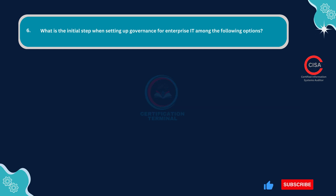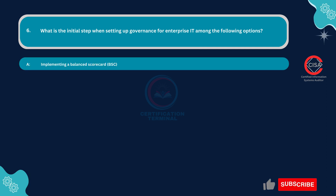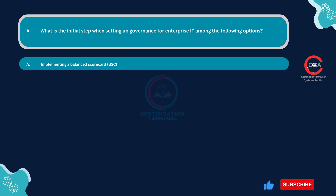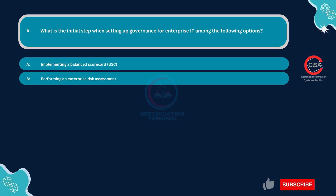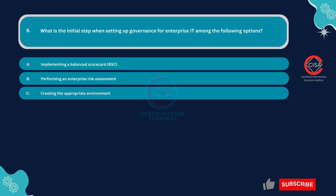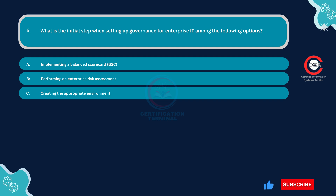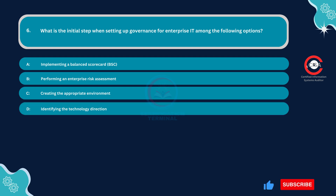Question number six: What is the initial step when setting up governance for enterprise IT? Option A: Implementing a balanced scorecard. Option B: Performing an enterprise risk assessment. Option C: Creating the appropriate environment. Option D: Identifying the technology direction. The correct answer is Option C: Creating the appropriate environment.